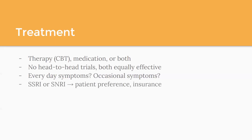It really comes down to patient preference — patients typically have very strong feelings about whether they want therapy or medications, and I always just leave it open because it's their body. If they have general symptoms every single day, SSRIs or SNRIs are the main first-line options, which typically comes down to patient preference and insurance. For as-needed symptoms — like if they just can't sleep a couple nights a week — therapy can be very helpful, but if they're not interested or don't have access or insurance, medications can be really helpful too.